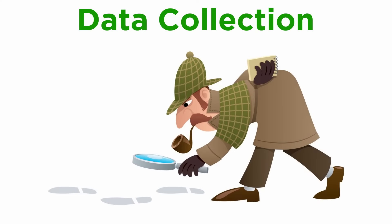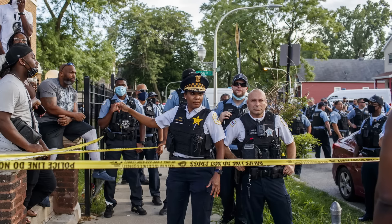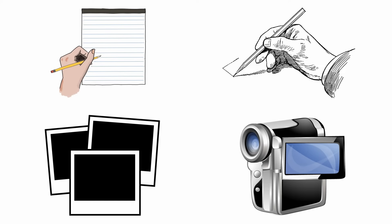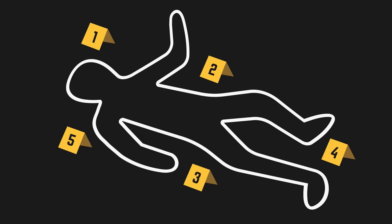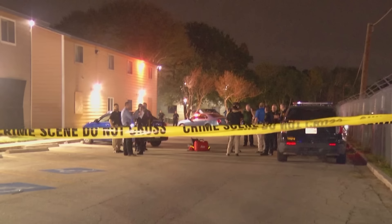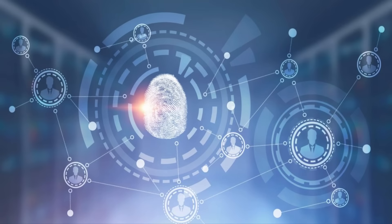The first stage of CSR is data collection. This includes all the information recovered from the crime scene, the victims, the suspects, and the witnesses involved. The most important stage will be documentation using techniques like note-taking, photography, sketching, and videography. The condition of the evidence and the victim are noted. Witness statements are recorded and compared with the documentation made at the scene. At this stage, the information collected is reviewed, organized, and analyzed by studying their interrelationships.